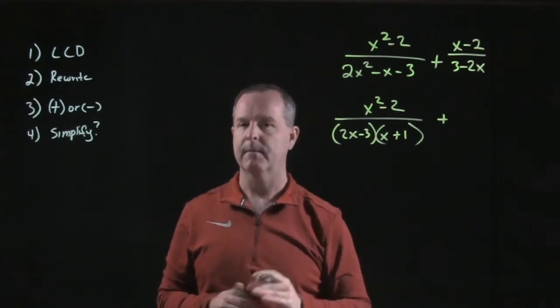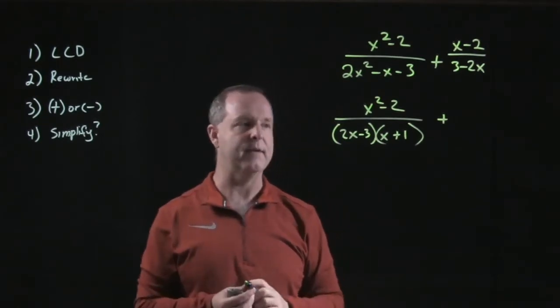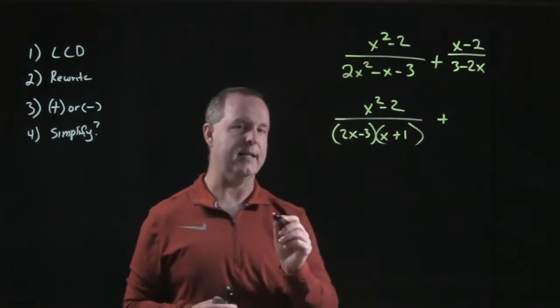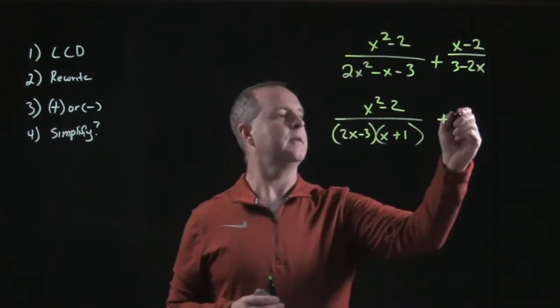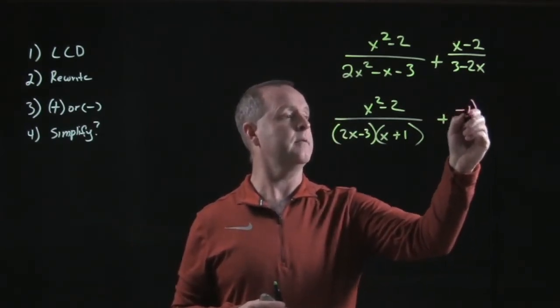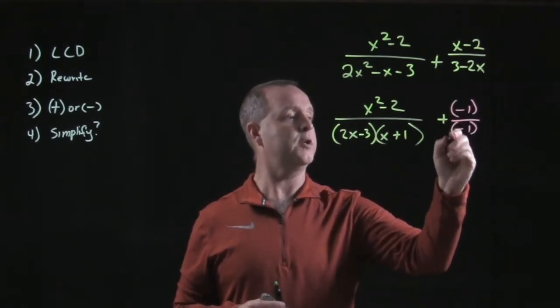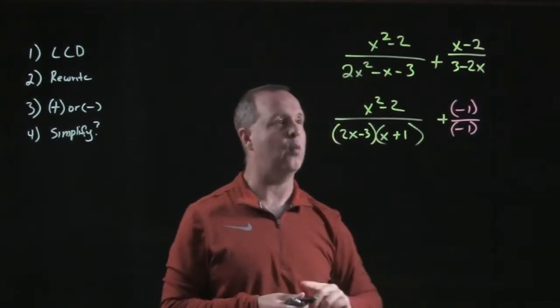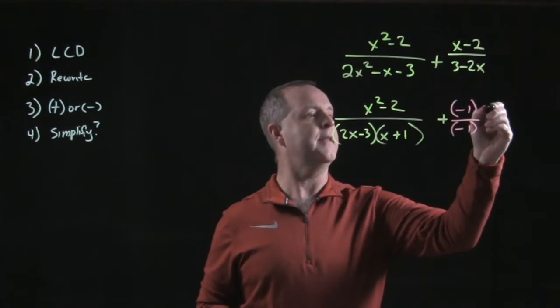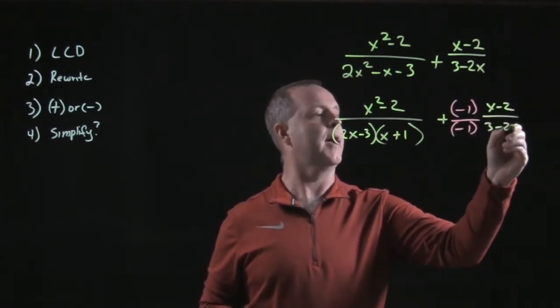Remember the technique we use: let's multiply by a clever version of 1, and the one we're choosing is negative 1 over negative 1, multiplying it by x - 2 over 3 - 2x.